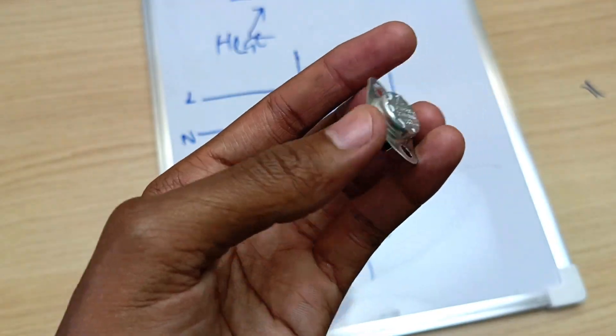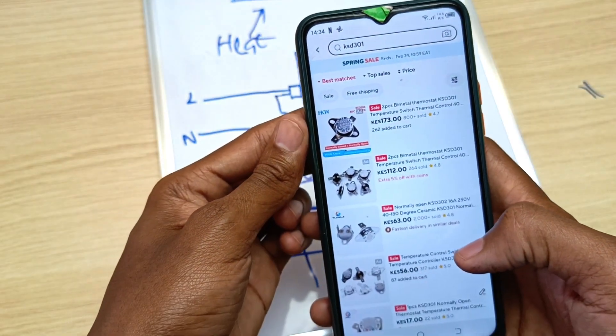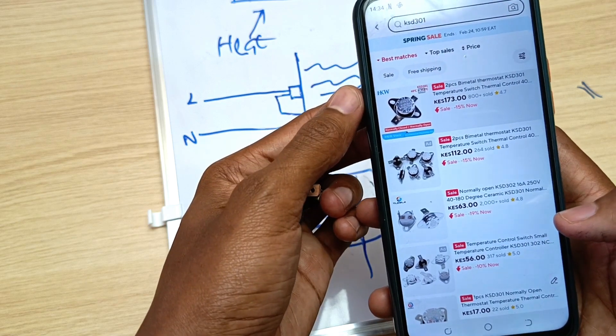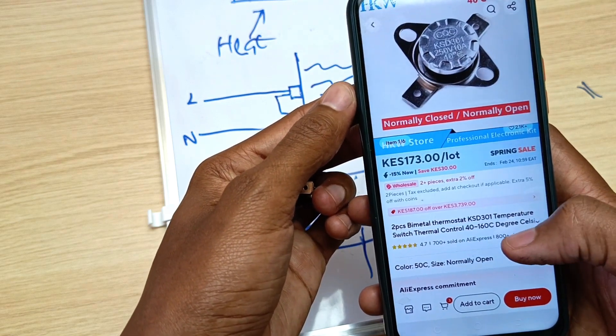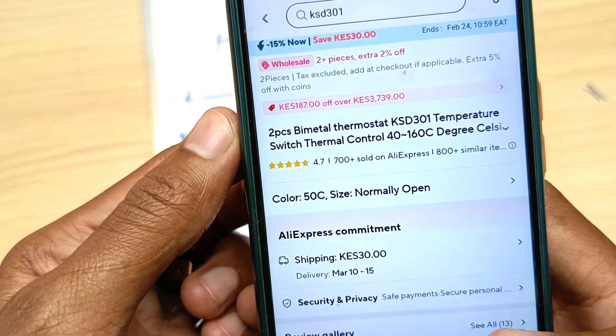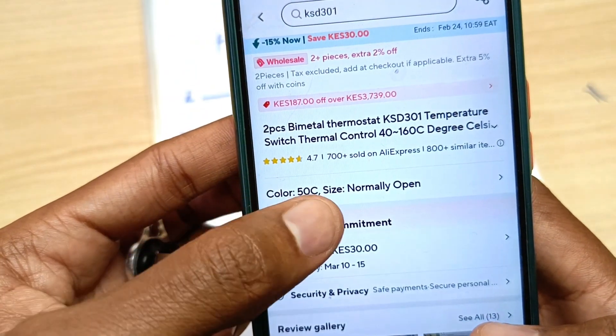And this thing can be found easily online, especially on AliExpress. And they are usually very cheap. You can see, this one is another one, but this one is different. This is normally open.